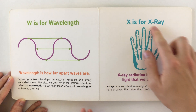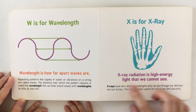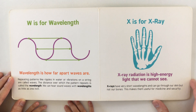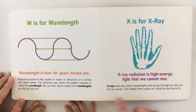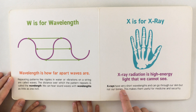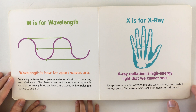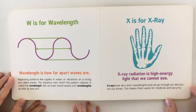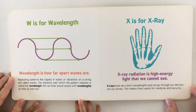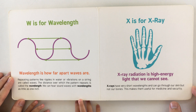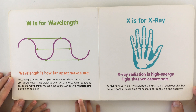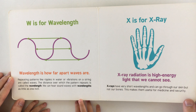X is for x-ray. X-ray radiation is high-energy light that we cannot see. X-rays have very short wavelengths and can go through our skin but not our bones. This makes them useful for medicine and security.